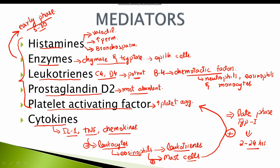To summarize: type 1 hypersensitivity reaction has two phases. The early phase is driven by mediators from mast cells, which include histamines, enzymes, leukotrienes, prostaglandin D2, and platelet activating factor. Once the early phase is over, cytokines recruit leukocytes such as eosinophils. These eosinophils result in a delayed or late phase reaction producing the same effects of vasodilation, increased vascular permeability, bronchospasm, and allergic reactions all over again.